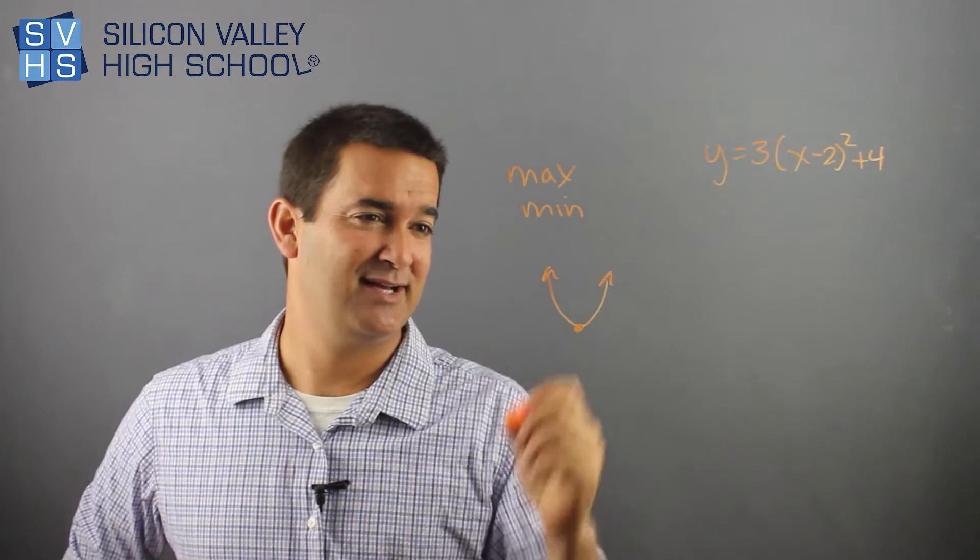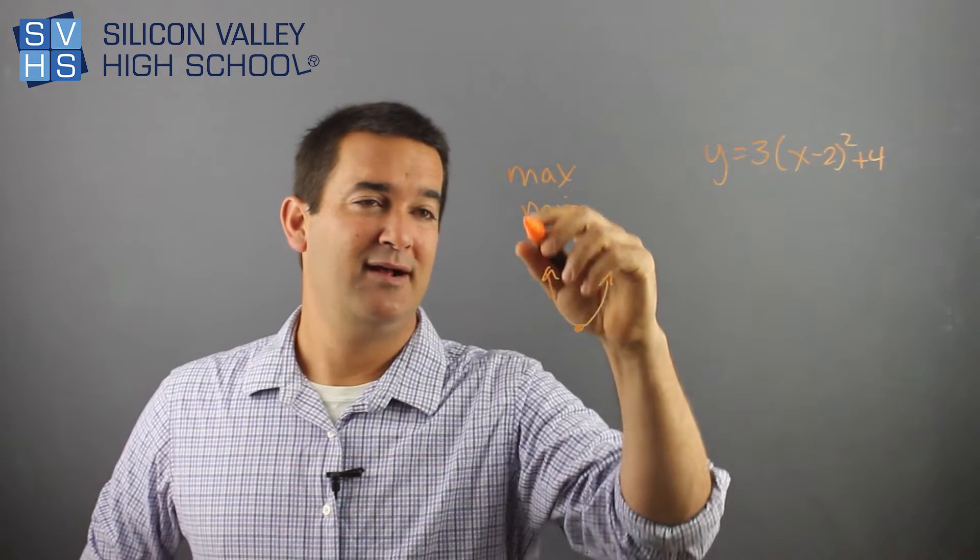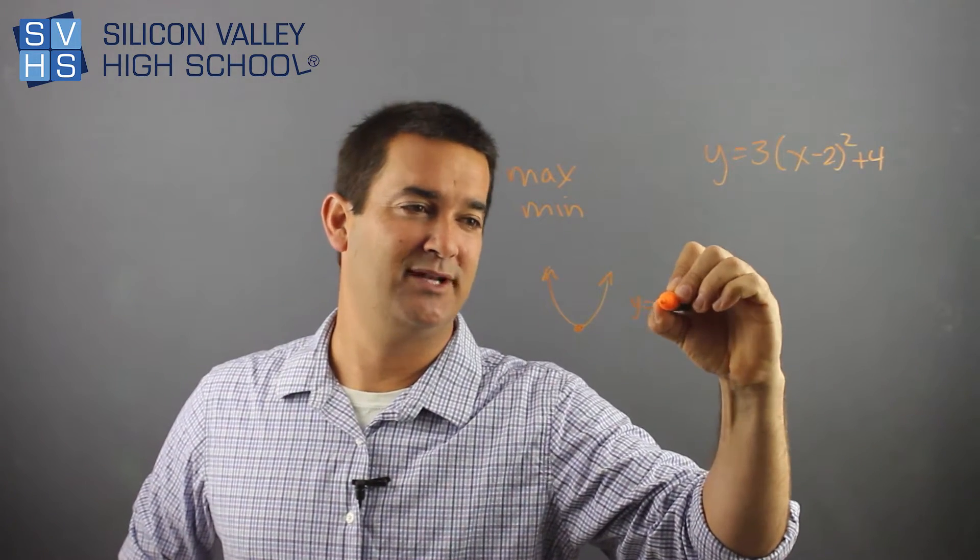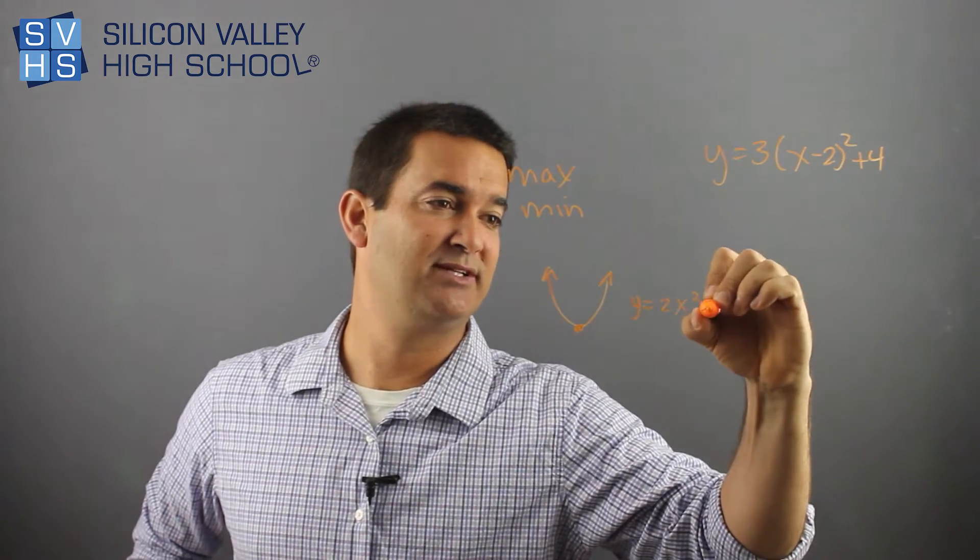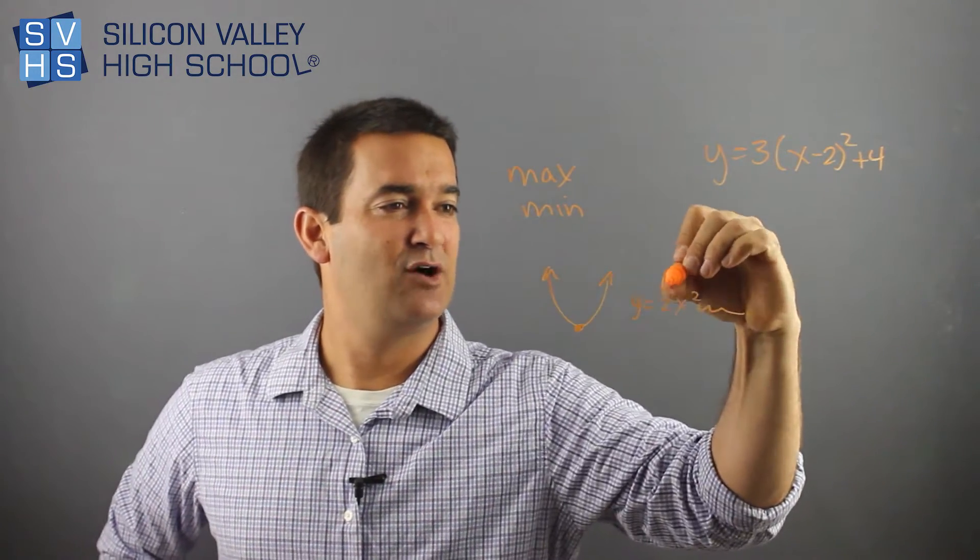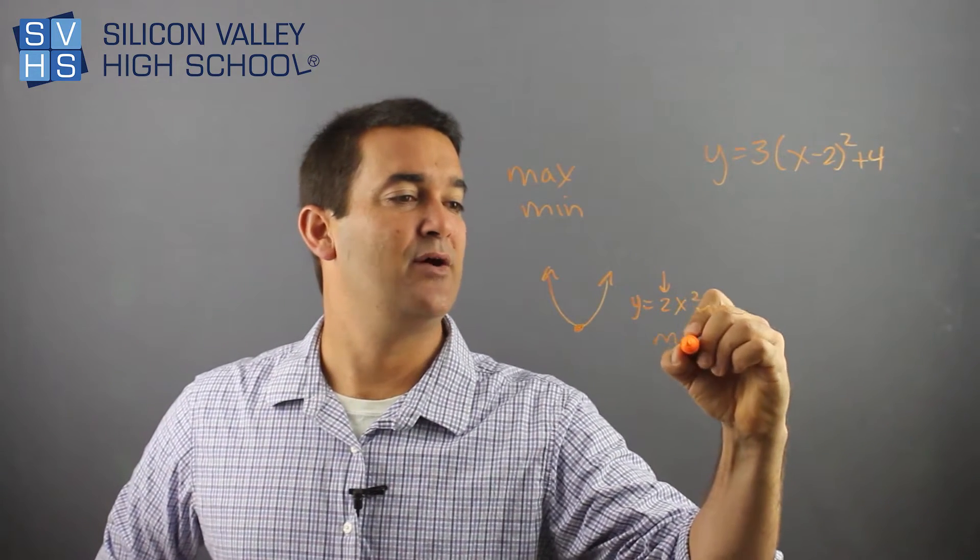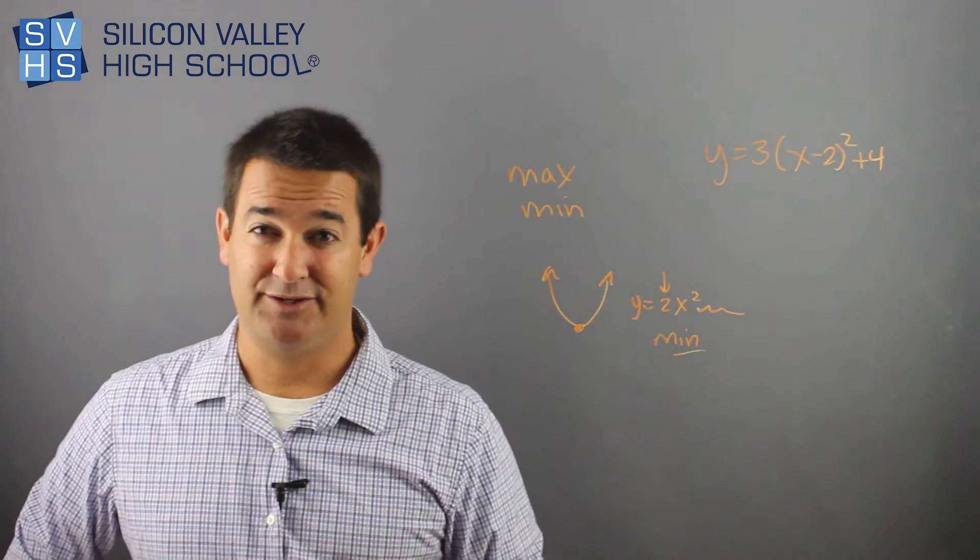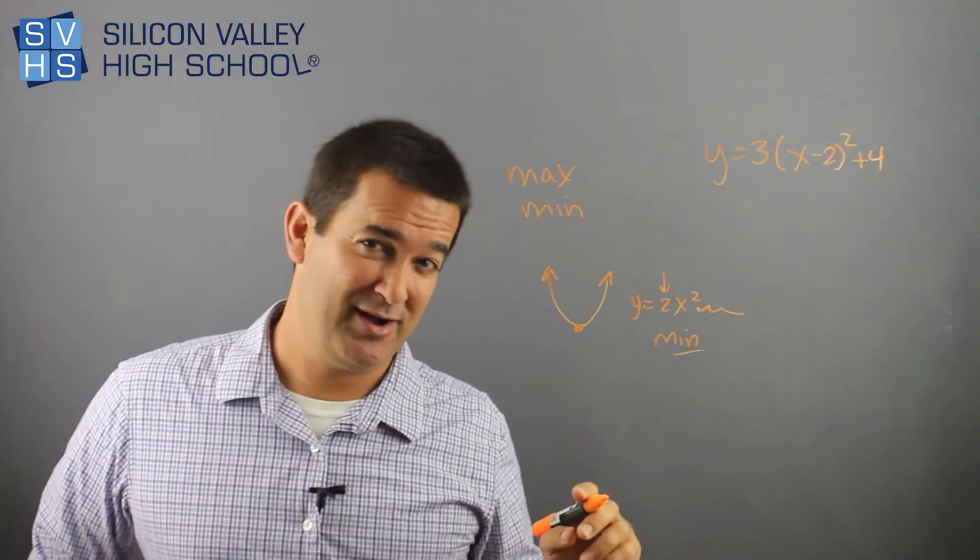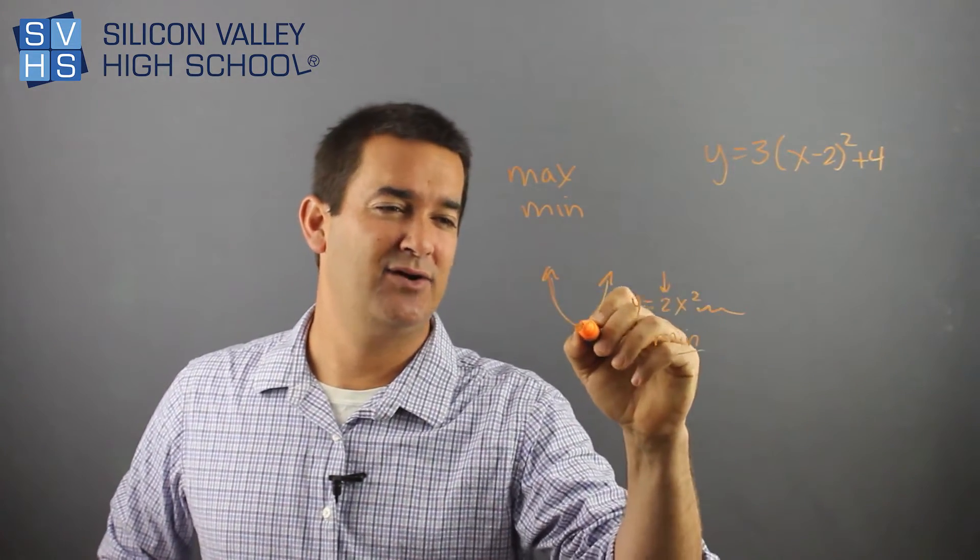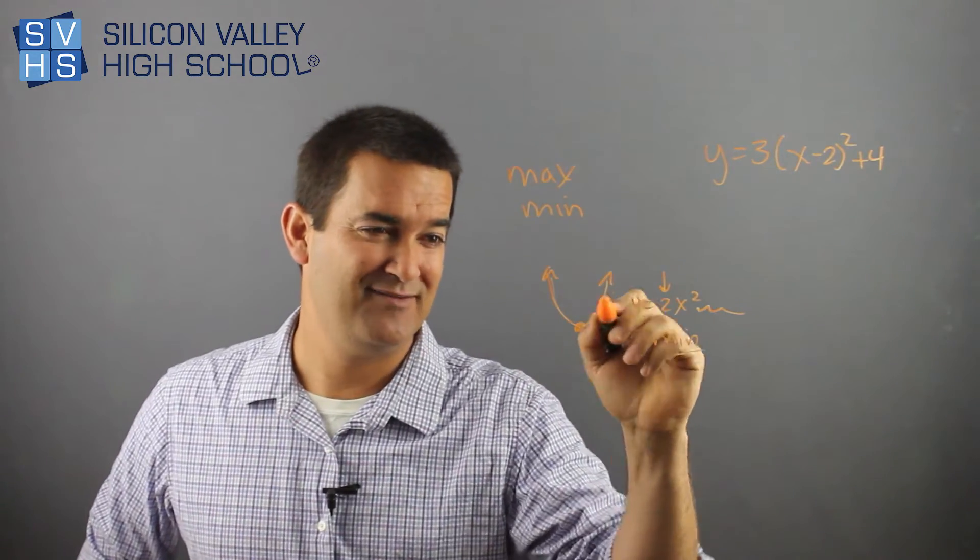That's why they would say in a positive parabola, like y equals, I'll give a random one, 2x squared plus a bunch of stuff. If this coefficient in front of the x squared is positive, you automatically know you have a minimum value. Maybe you should sketch the u and be like, oh right, if it's like a positive u, obviously there's a min.